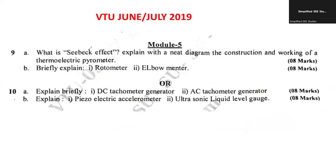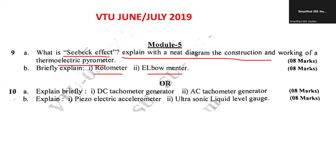In the year 2019, you can see questions like: what is the Seebeck effect? Whenever you are studying about thermocouples, you will be familiar with the phenomenon called the Seebeck effect. You have to explain about the hot metal junction and cold metal junction, and how you convert the difference in temperature in terms of voltage. Try to write some mathematical expression. Also, explain the neat diagram of construction and working of a thermoelectric pyrometer. What is a rotameter and the elbow meter?